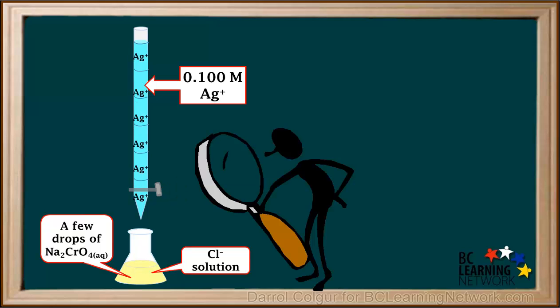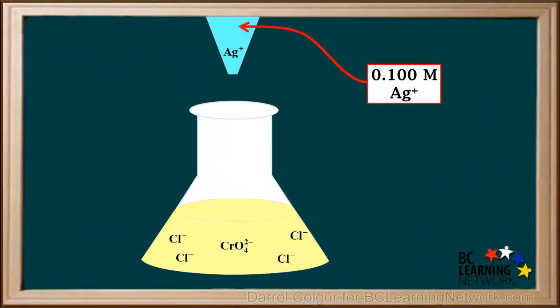Let's take a closer look at what happens in the flask as silver ions are added to it. Now we've zoomed into the flask. Silver ions preferentially bond to chloride ions rather than chromate ions.